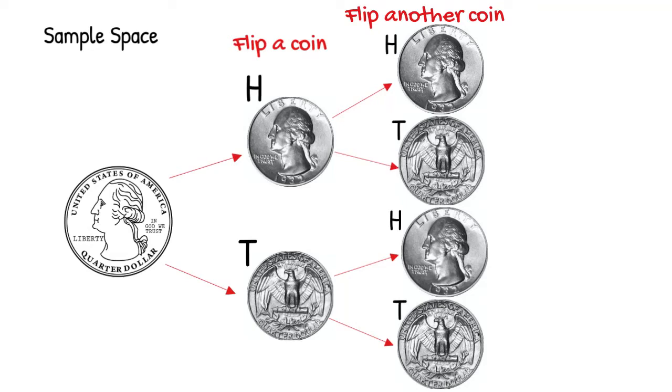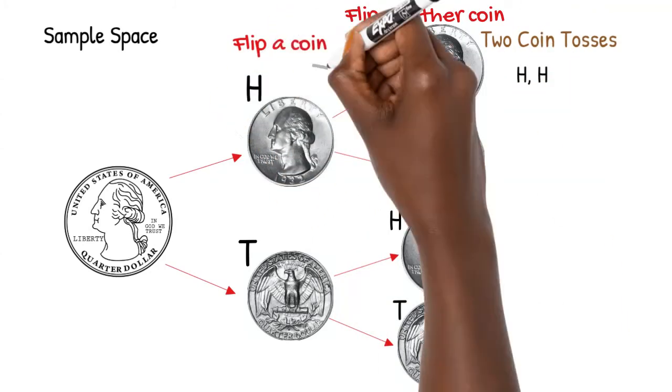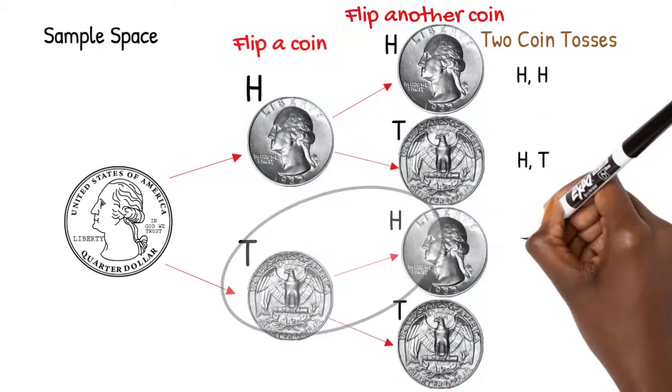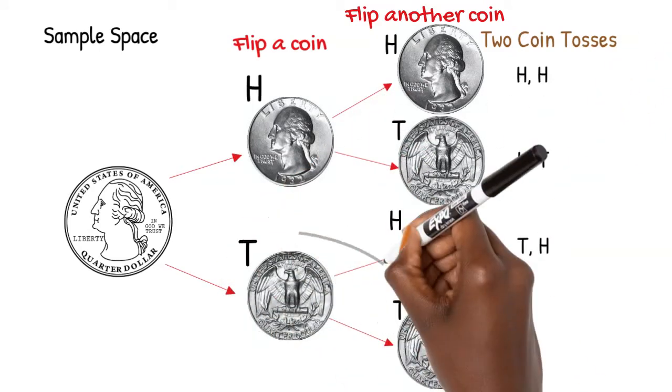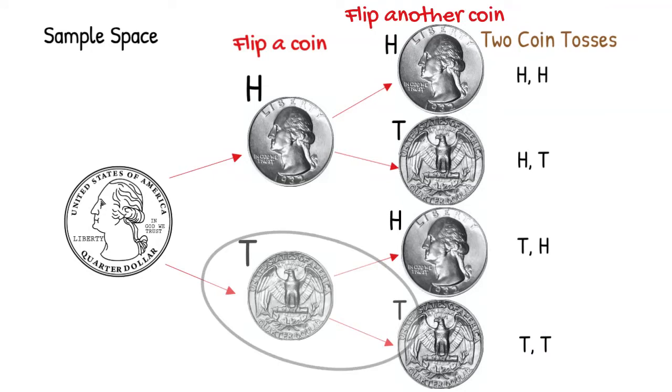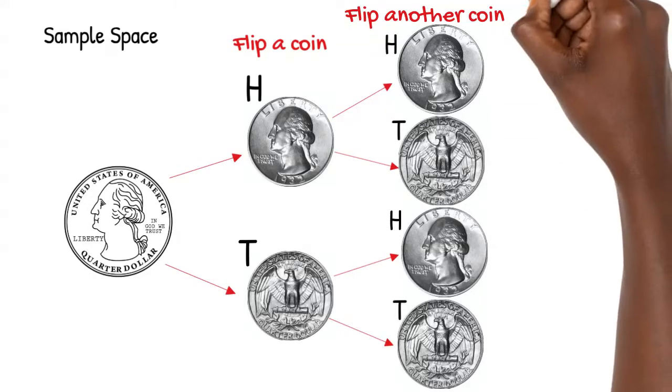We can follow each set of branches to determine the sample space for two coin tosses. Here we have heads followed by heads, then heads followed by tails, then tails followed by heads, and finally tails followed by tails. The more trials we complete, the more helpful a tool like a tree diagram becomes to make sure we're not missing any options.